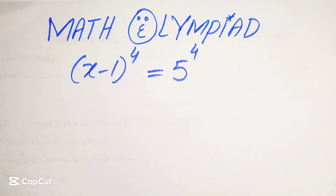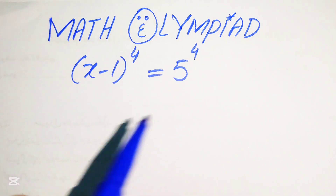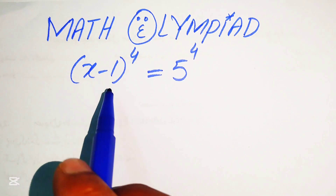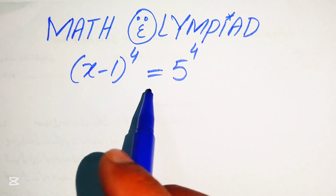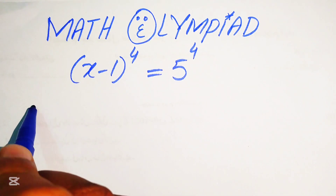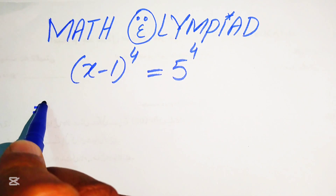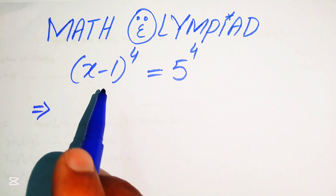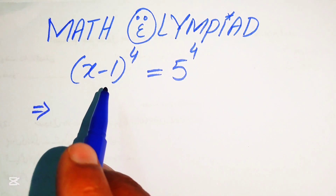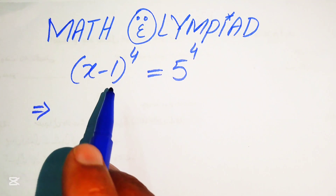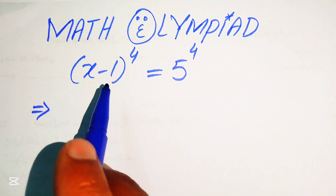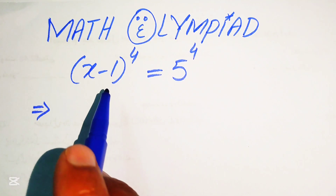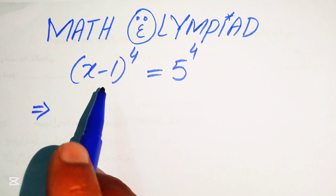Hello everyone, welcome. We have this algebra problem: (x-1) to the power of 4 equals 5 to the power of 4. This is a fourth-order equation, so we need to find all four roots — all four values of x.